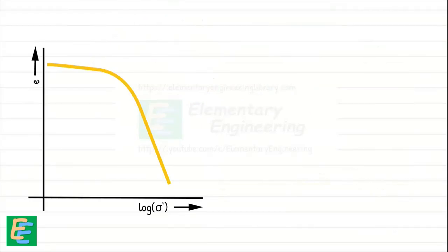The flatter part of the curve represents the soil's recompression phase under loads lower than its historical maximum. The steeper part indicates the soil is compressed under loads greater than it has previously experienced. In the flatter part, the soil is in over-consolidated state or pre-consolidated state.